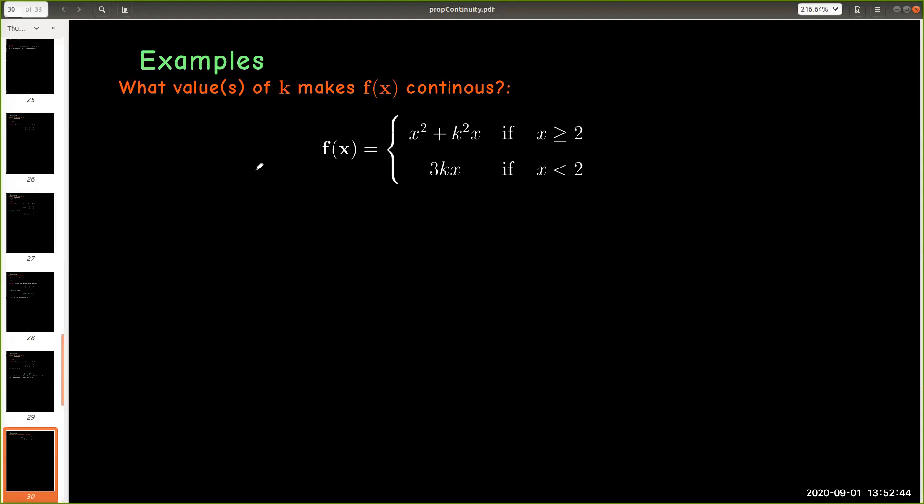So one last example. We're given a piecewise defined function. And it depends on this parameter k, some constant k. And what we would like to know is for what value or what values of k will this function be continuous? Now notice that with this function, both the left branch and the right branch are polynomials. And so the only thing we have to do is choose k so that these two branches meet when x equals 2.